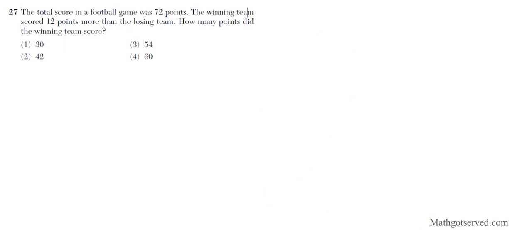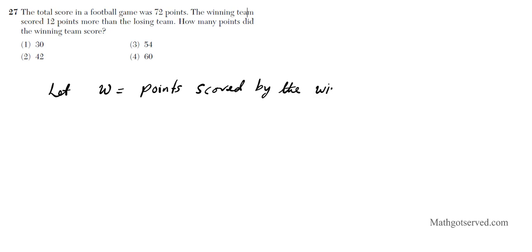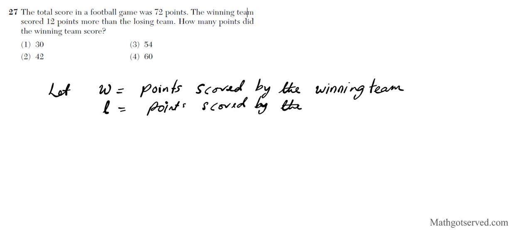Moving to question 27: the total score in a football game is 72 points, and the winning team scored 12 points more than the losing team. How many points did the winning team score? Let's declare variables: let w equal points scored by the winning team, and L equal points scored by the losing team. Equation 1: w plus L equals 72. Equation 2: w equals L plus 12.